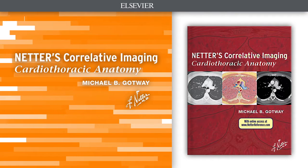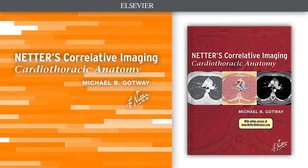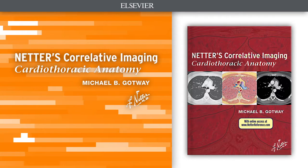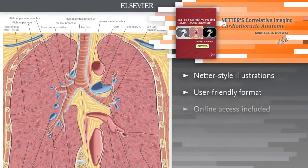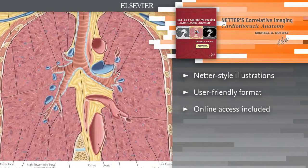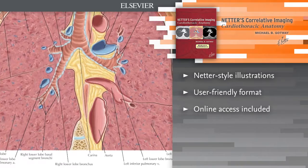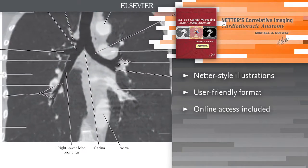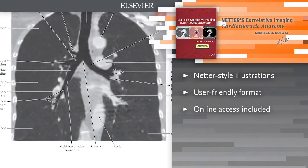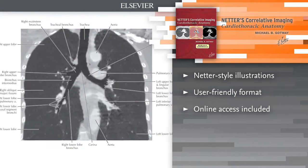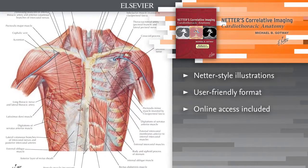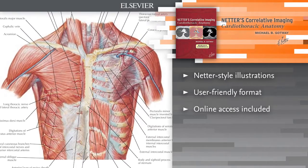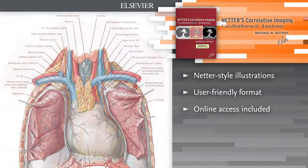Introducing Netter's Correlative Imaging Cardiothoracic Anatomy. This third title in the Netter's Correlative Imaging series provides exceptional visual guidance for thoracic, chest wall, lung, and heart anatomy. Dr. Michael Gottway presents Netter's beautiful and instructive paintings and illustrated cross sections side by side with high quality patient images to help you visualize the anatomy section by section.